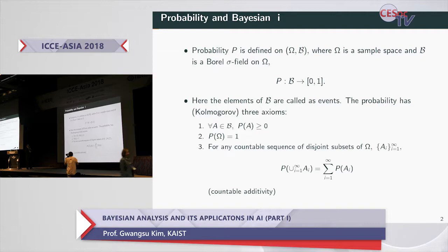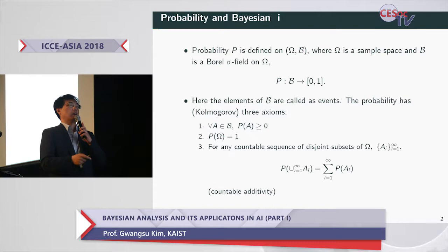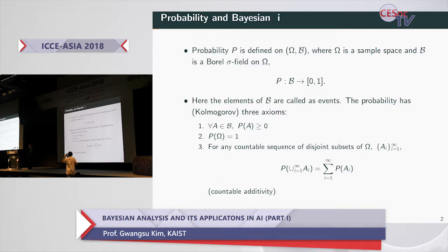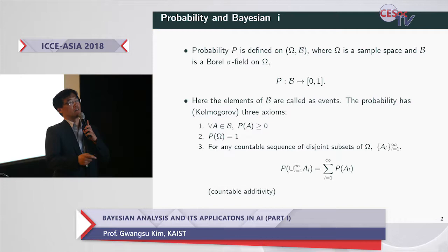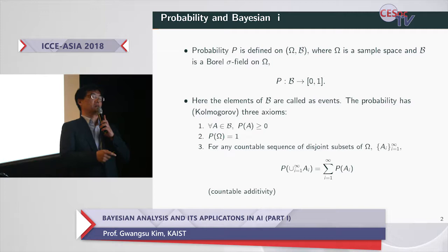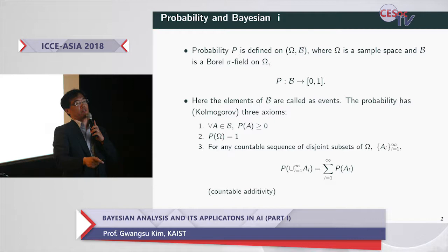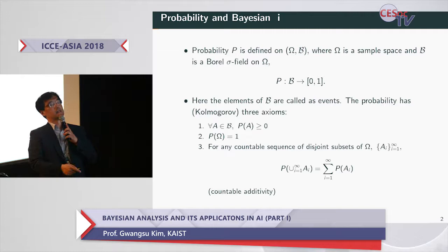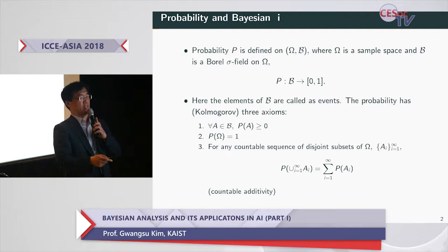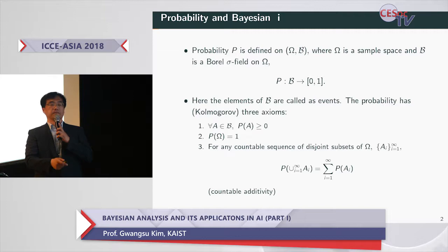Usually the elements of B are called events. Probability has very famous axioms called the Kolmogorov axioms. Kolmogorov was a Russian mathematician. The first axiom is that for all elements of B, the probability is non-negative. The second is that the probability of omega equals 1. The third is countable additivity: for any countable sequence of disjoint subsets of omega, the probability of the union equals the summation of all probabilities.